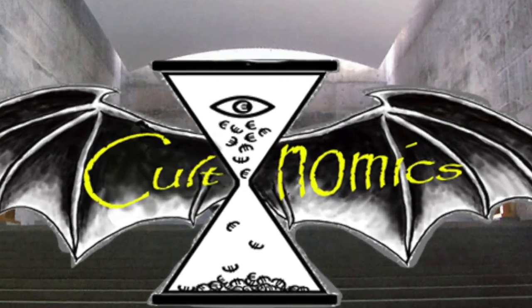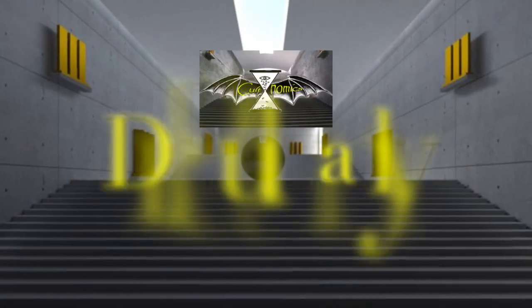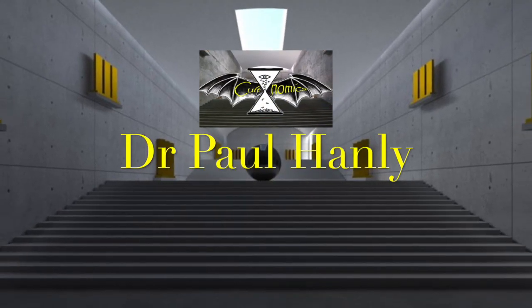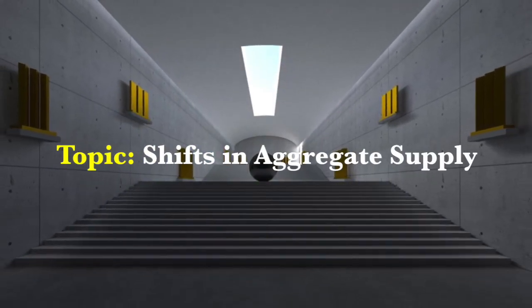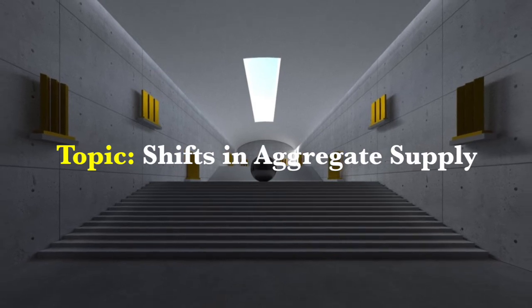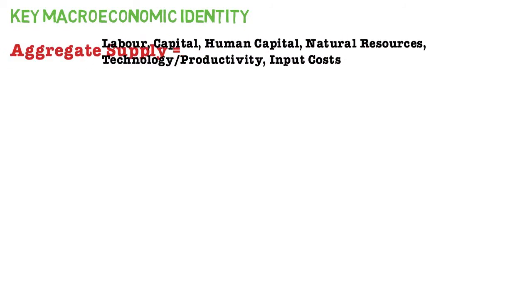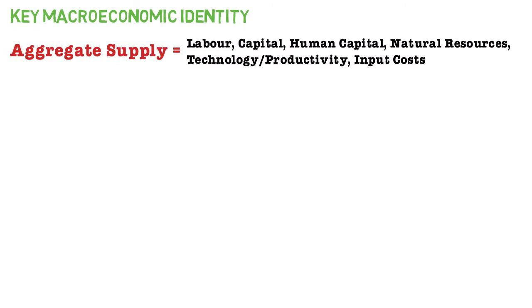Hi guys and welcome to Cultnomics. My name is Paul Hanley and today I'm going to be chatting to you about shifting the aggregate supply curve. We're going to look at the key macroeconomic identity of aggregate supply in both the short run and the long run. Aggregate supply is the total quantity of goods and services that firms produce and sell at any given price. It is driven by a number of components: namely labor, capital, human capital, natural resources, and technology or productivity.